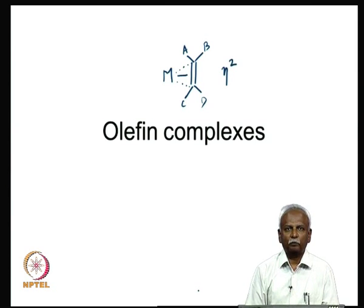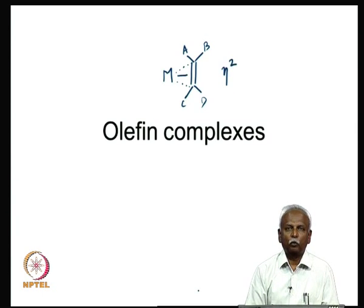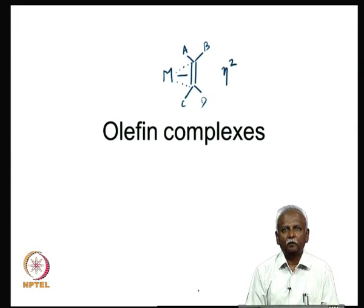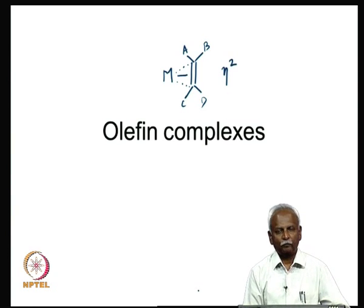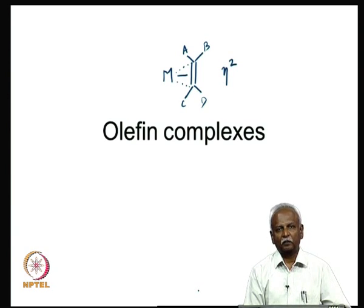Let us take a look at some of these complexes. It is interesting that there is a very similar bonding pattern between olefins and metals and carbon monoxide and metals. The give-and-take of electrons that we discussed with metal carbonyl complexes exists with metal olefin complexes also. The types of syntheses we encounter in metal olefin complexes are very similar to what we encounter in metal carbonyls. Let us take a look at a few of the synthetic methods, and then examine a few structures and the bonding pattern in these molecules.